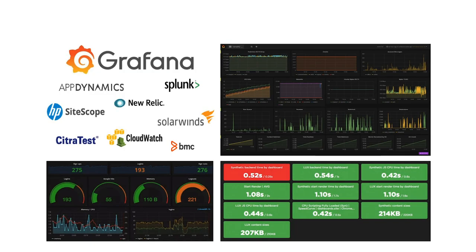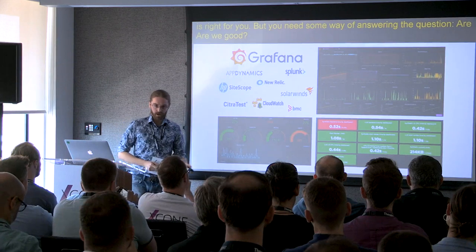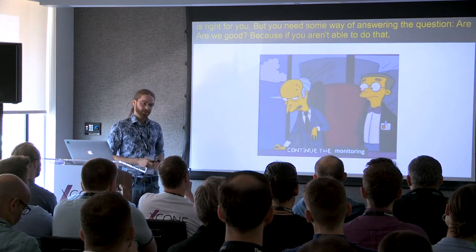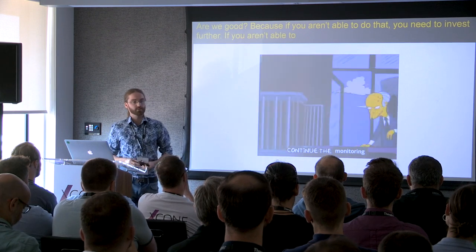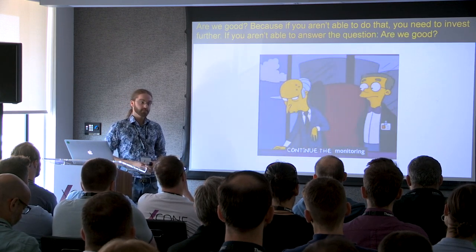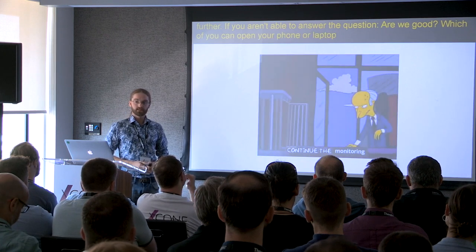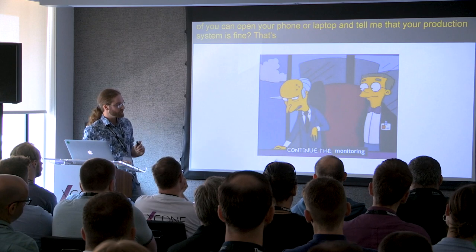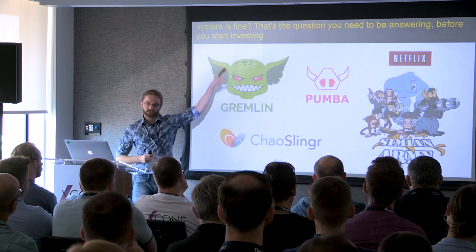I think that bar is monitoring. I think that bar is having visibility on your system. There are a great many tools that can do this—big fan of Grafana myself. Most of these are Grafana dashboards. There are APM tools, log aggregators like Splunk, CloudWatch. There's a great many tools. I'm not going to tell you which one's right for you, but you need some way of answering the question: are we good? Because if you aren't able to do that, you need to invest further. If you aren't able to answer the question 'are we good,' which of you can answer that question right now? Which of you can open your phone, open your laptop, and tell me if your production system is fine? That's the question you need to be answering before you start investing in chaos engineering.